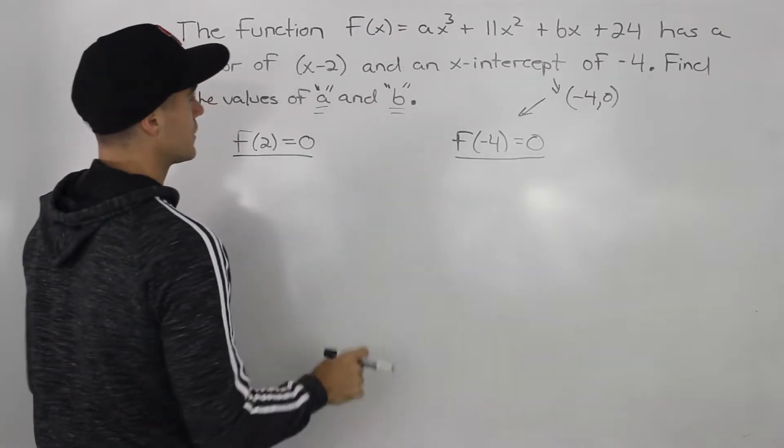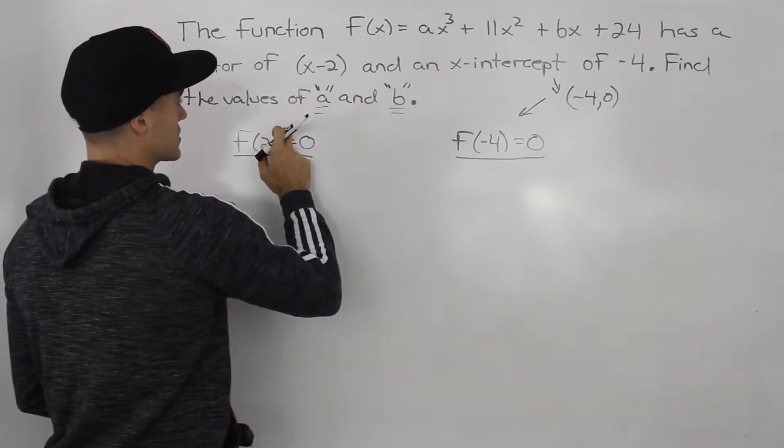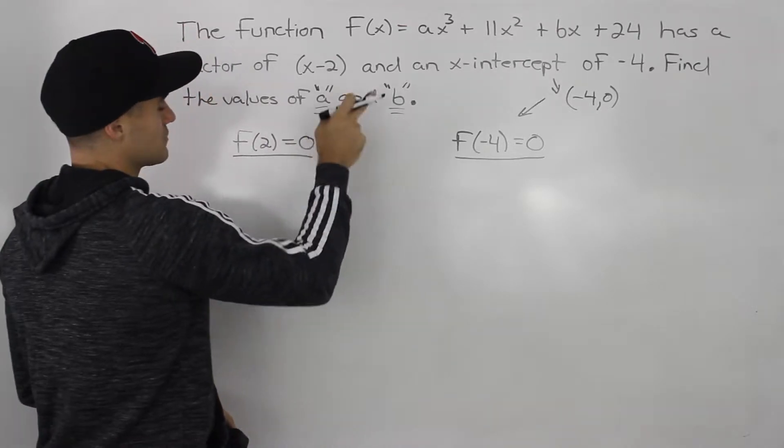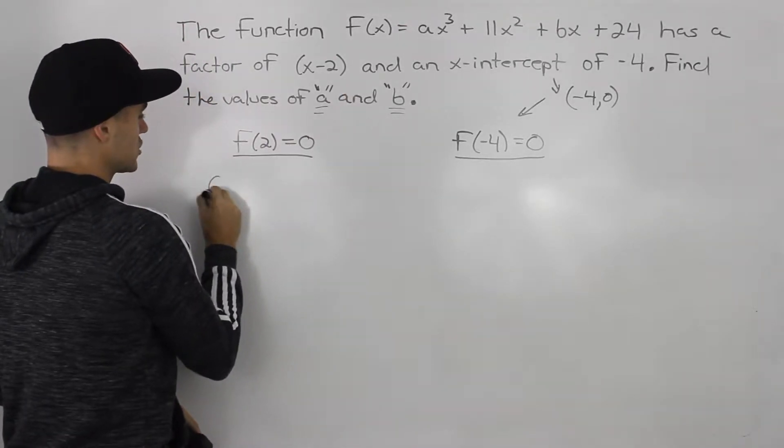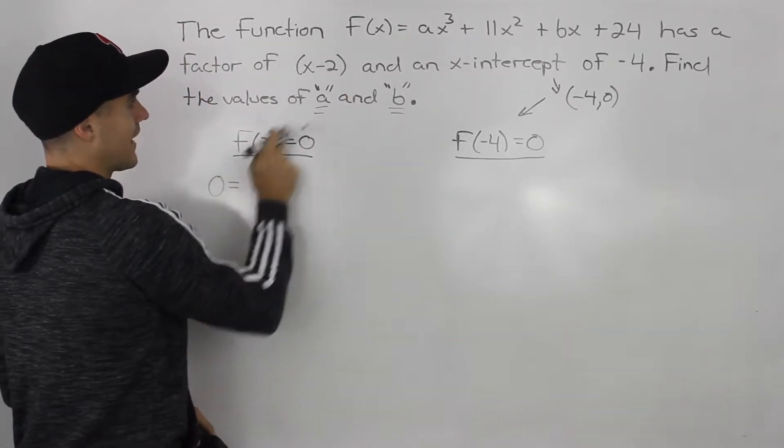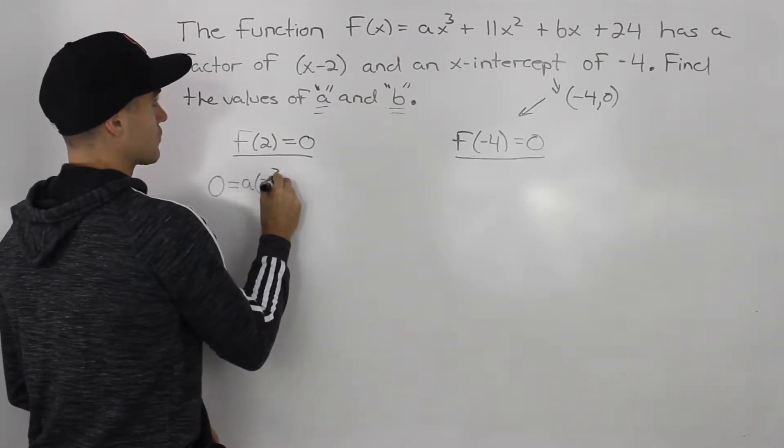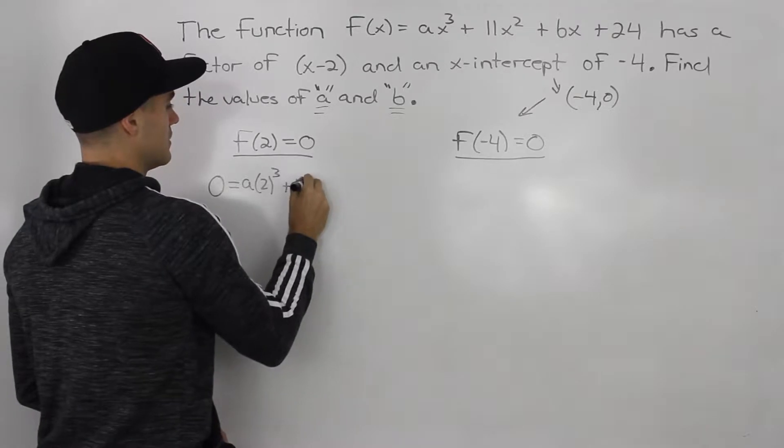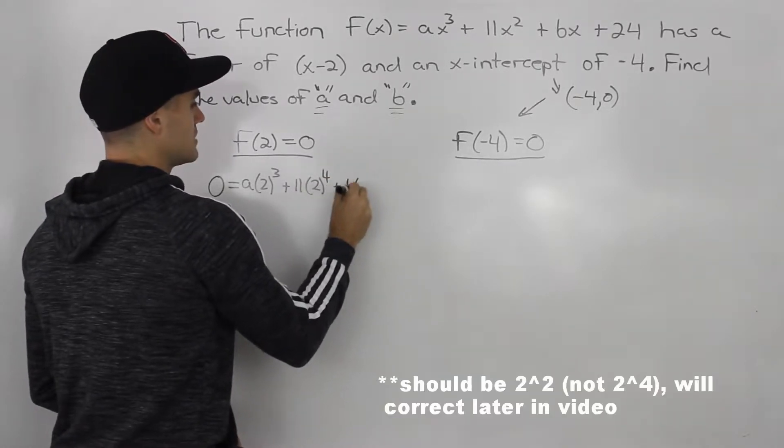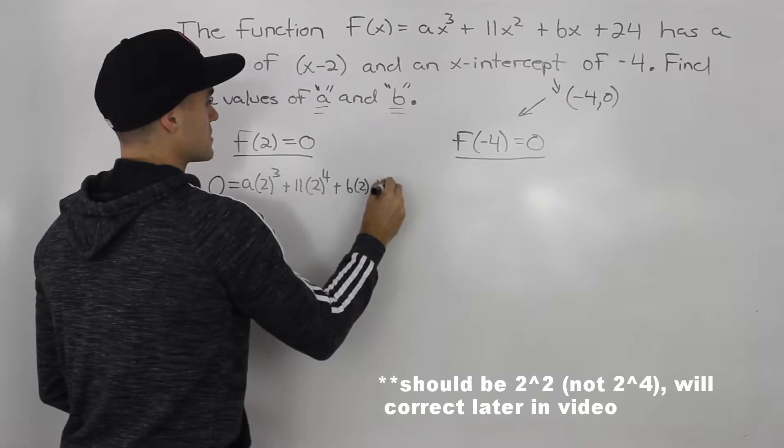We can just plug these values for x and y into the function we're given, and then we'll be given two equations. So let's start off with this first expression. So f(2) is equal to 0. So the function has a y value of 0 when the x value is 2. So we have a times 2 to the power of 3 plus 11 times 2 to the power of 4 plus b times 2 plus 24.